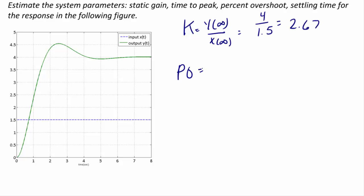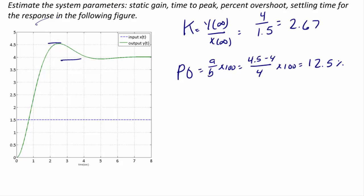The percent overshoot is the maximum value minus the steady-state value divided by the steady-state value times 100. The peak occurs at 4.5 and the steady-state is 4, so percent overshoot = (4.5 − 4)/4 × 100 = 12.5%. The time to peak is approximately 2.5 seconds, found by reading the time at which the output reaches its peak of 4.5.